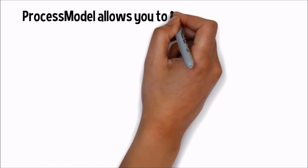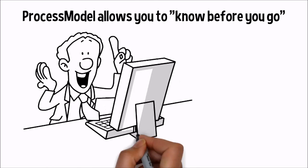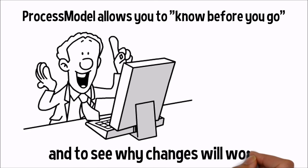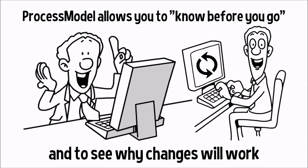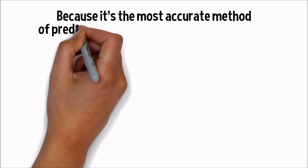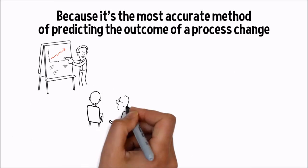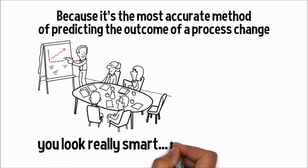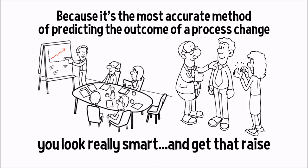Process model allows you to know before you go, and see why changes will work. Because it's the most accurate method of predicting the outcome of a process change, you look really smart and get that raise.